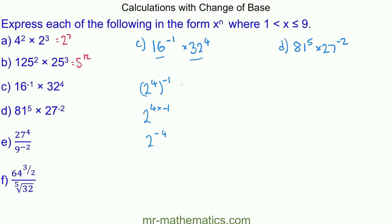And 32 we can write as 2 to the power of 5, raised to the power of 4. Using the power rule, we multiply the powers — 5 times 4 — so this becomes 2 to the power of 20. Finally, we add the two powers: negative 4 and 20, giving 2 to the power of 16.